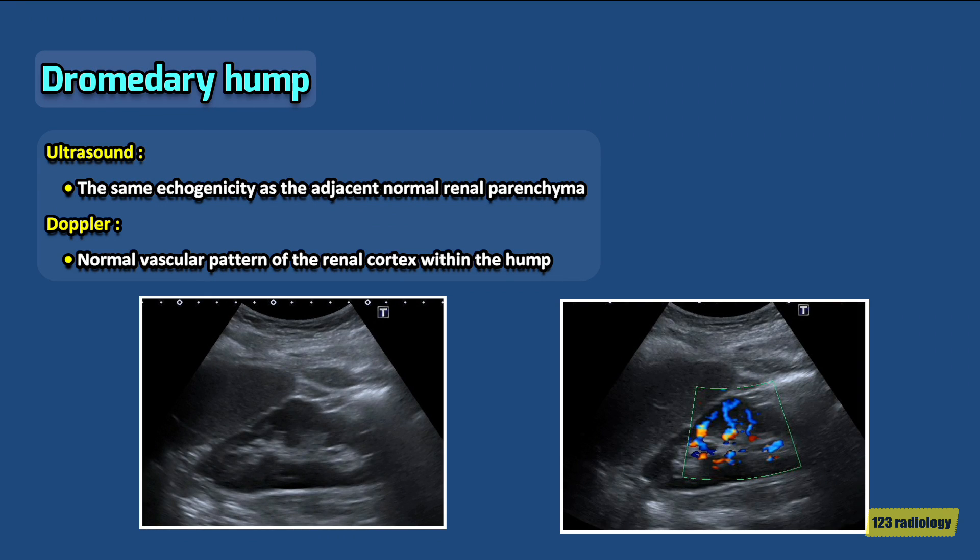On ultrasound, the dromedary hump shows the same echogenicity as the adjacent normal renal parenchyma, while a renal tumor may appear as a heterogeneous mass with areas of cystic changes and hemorrhage. On color Doppler ultrasound, it demonstrates a normal vascular pattern of the renal cortex within the hump.